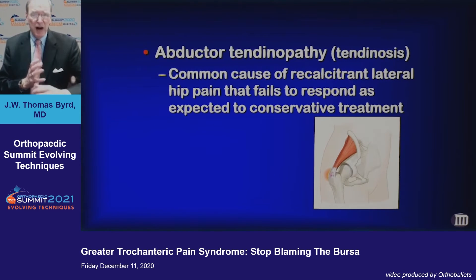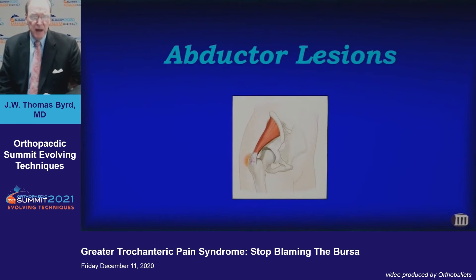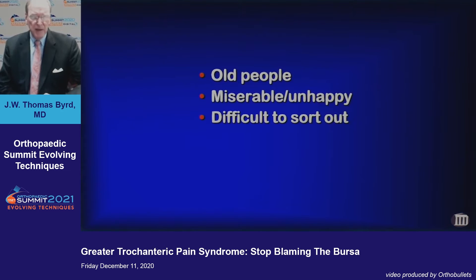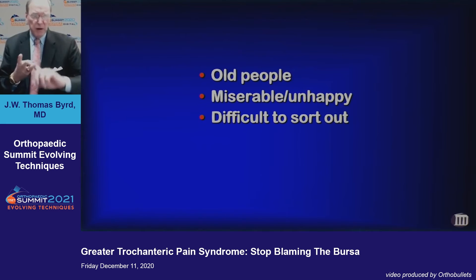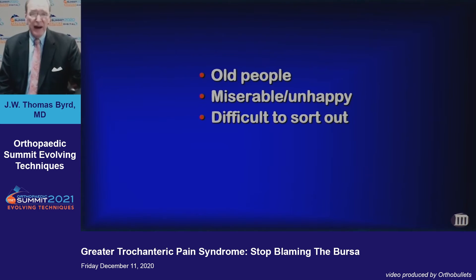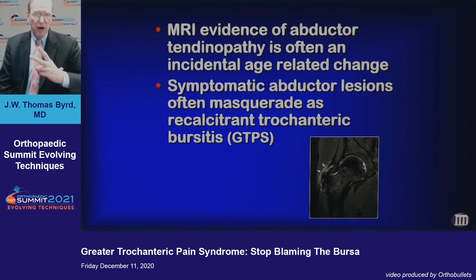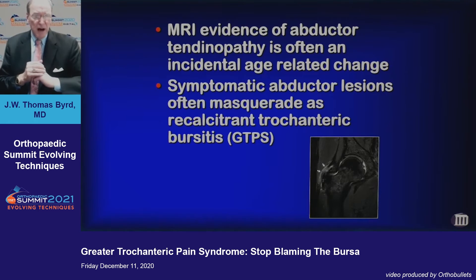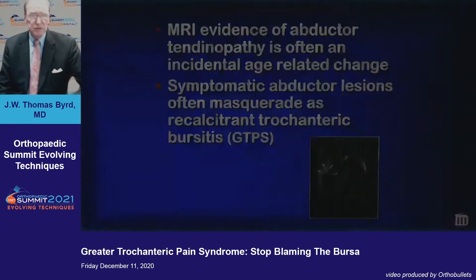Abductor tendinopathy is a common cause of recalcitrant, laterally-based hip pain that fails to respond to conservative treatment. I used to run the other way from abductor lesions because I felt like these patients were old, they were miserable, and they were hard to sort out. But over time, I figured out that only two of these three things were true — they were severely disabled, but not necessarily that hard to sort out. Two things that are true: MRI evidence of abductor tendinopathy is often an incidental age-related change, and symptomatic abductor lesions often masquerade as recalcitrant trochanteric bursitis.